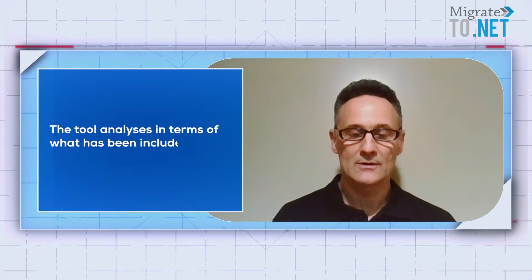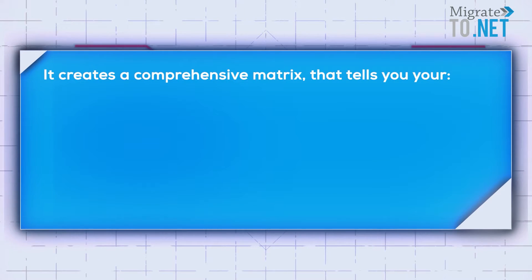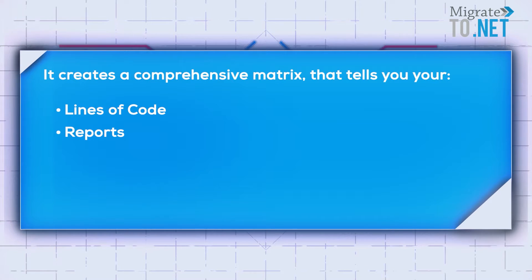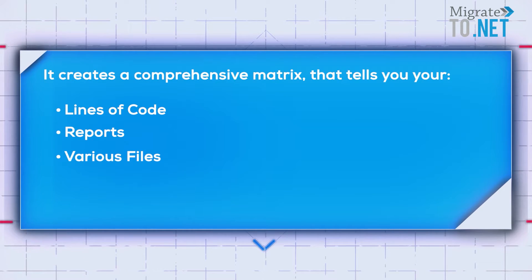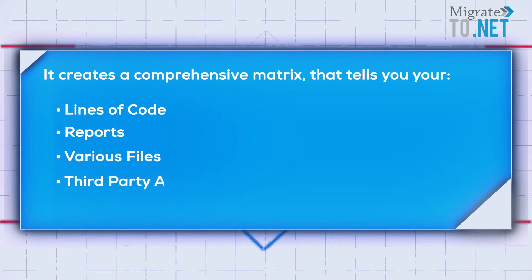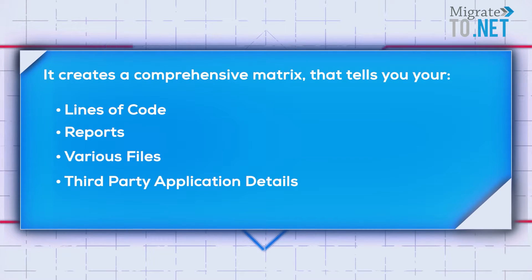The tool is going to do your analysis in terms of what has been included into the application over the years. It's going to create a comprehensive matrix that's going to tell you your lines of code, your reports, your various files. It's also going to talk about your third-party application details — all great information for you to make decisions on whether to migrate or not. It's also very good for showing senior management how the application has grown over the years.